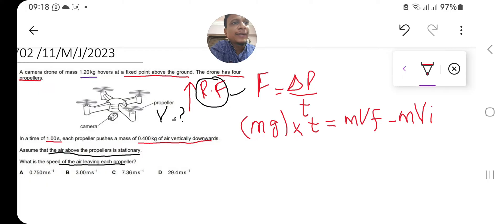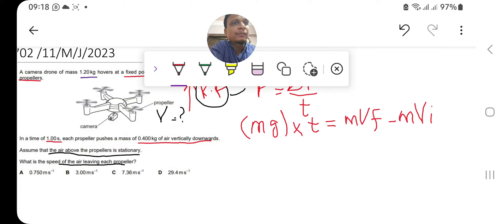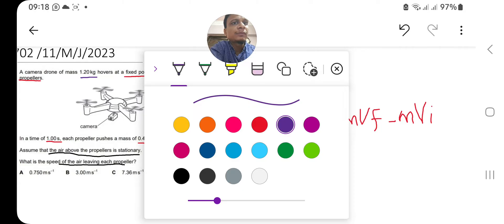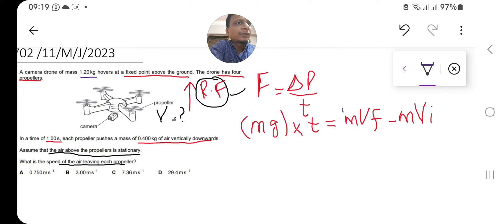Mind it that this is for the air. The initial velocity of the air above the propeller is zero, so vi is zero. Therefore, the whole factor m·vi becomes zero. This velocity vf is what we need to find.